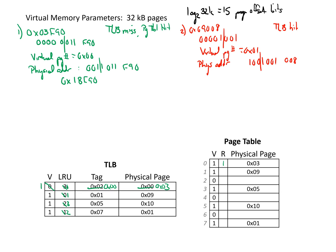When we break the address apart, we see a physical address of 0x49008. We'd also go and update our TLB and page table. We accessed entry 1, so we update that to be the most recently used and update the LRU counters for everything else. We also set the reference bit for page table entry 1 since we accessed it.